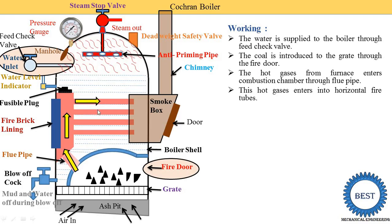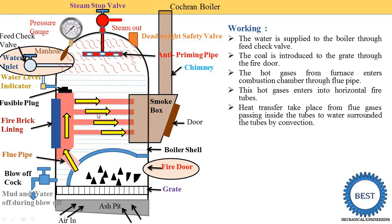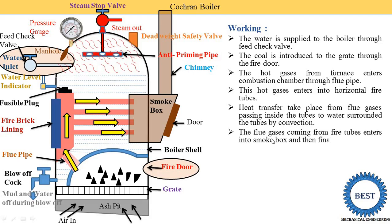The hot gases pass through the different fire tubes, and heat transfer takes place from the flue gases to the water surrounding the tubes. The flue gases heat the fire tube, and the fire tube heats the water. Heat transfer takes place from the flue gases inside the tube to the water surrounding the tubes by convection heat transfer. The flue gases coming from the fire tubes then enter the smoke box and are finally discharged to the atmosphere through the chimney.